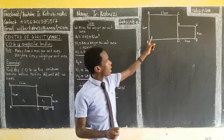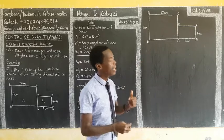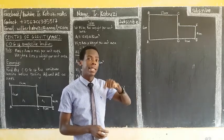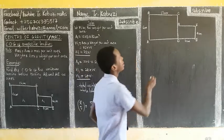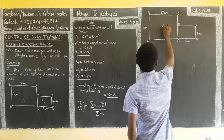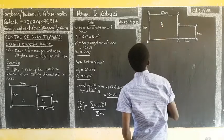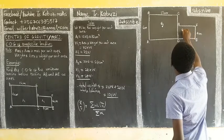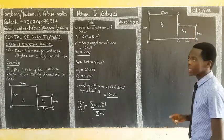We first find the center of gravity of each individual section. For a rectangle, the center of gravity always acts at the middle. So for the first rectangle, the center of gravity is at the middle — that is where our first center of gravity acts. And for the second rectangle, the center of gravity is again at its middle.